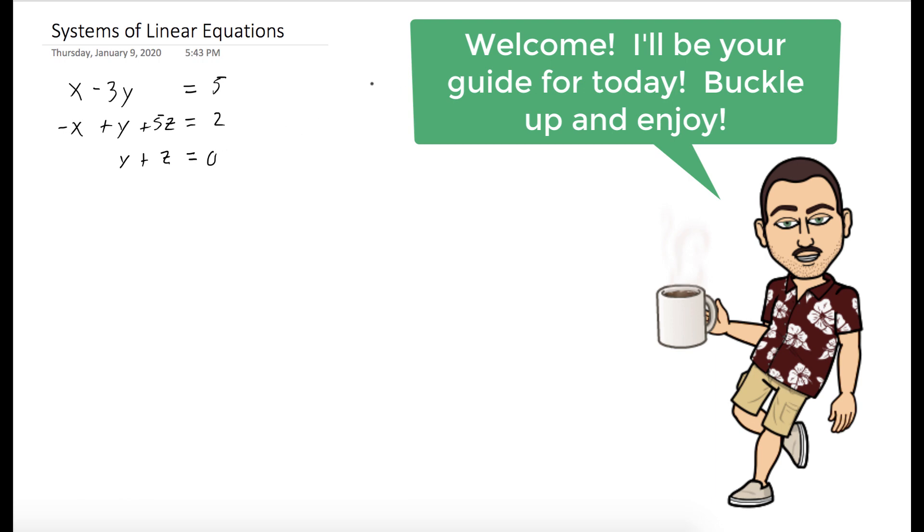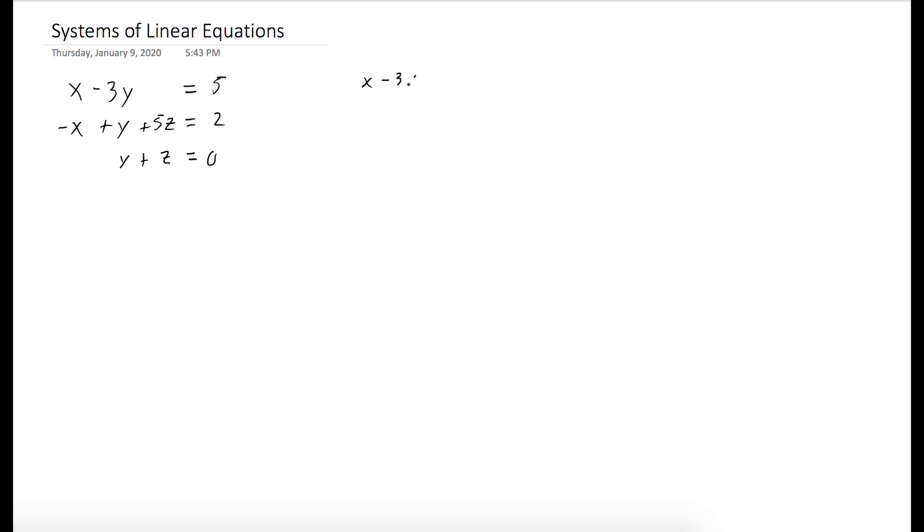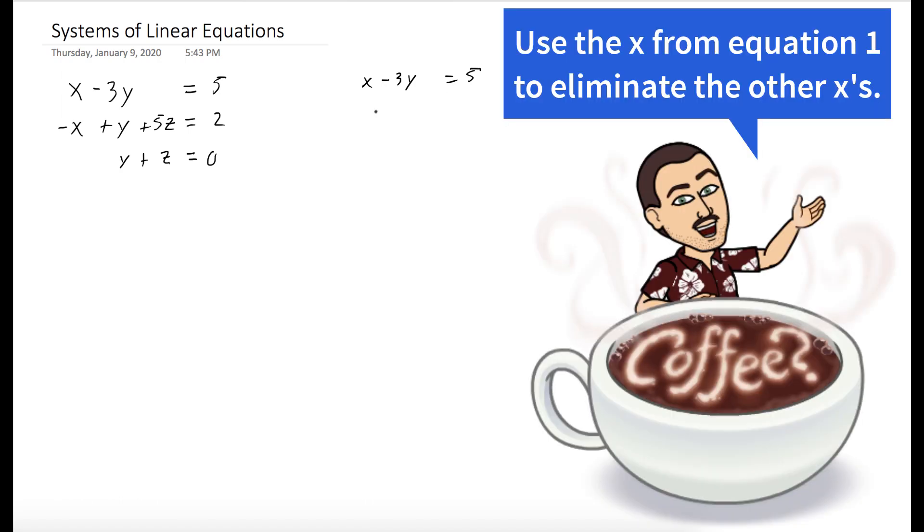And what we're going to want to do is eliminate the x's in the second and third rows. There's no x's in the third, so let's just eliminate the one in the second row. The way we can do that is by adding the first row to the second row. This results in minus 2y plus 5z equals 7, and this will be our new second equation.